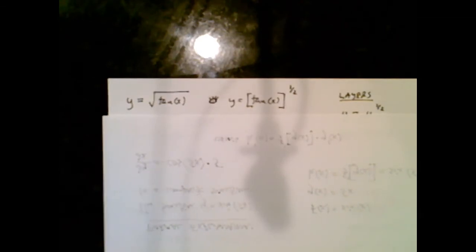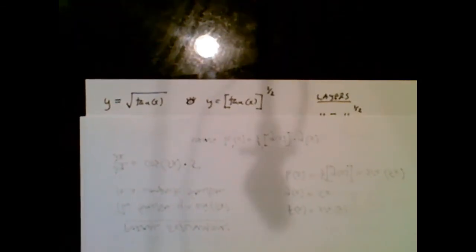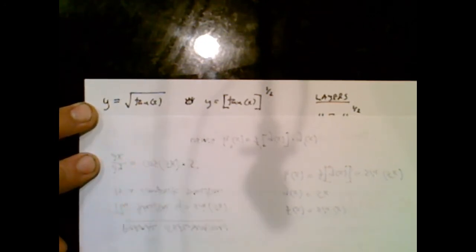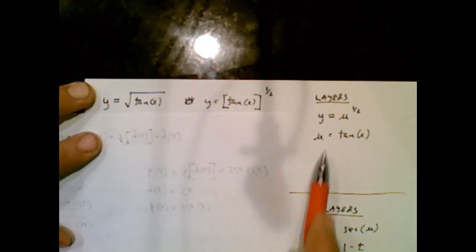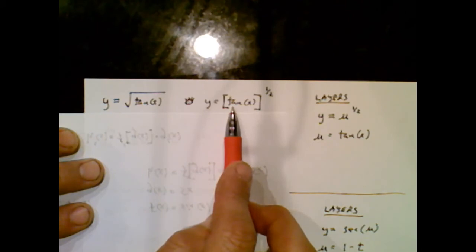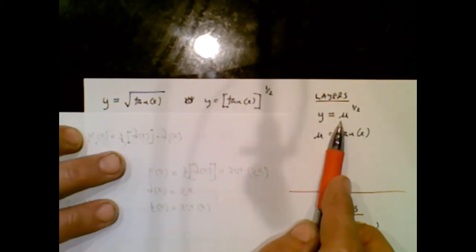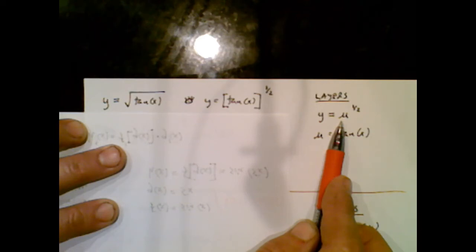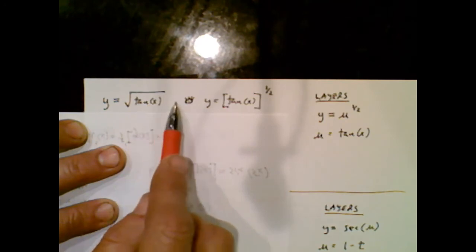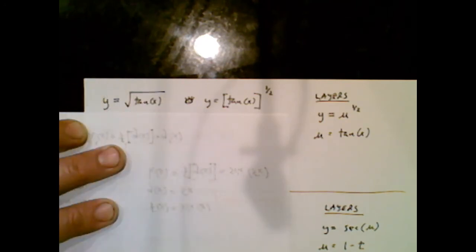Okay, our first example is y equals the square root of the tangent of x. That doesn't necessarily look like you have layers, but you really do. You have the layers. By the way, I did an eyeball adjustment. You have a u to the one half as an outer layer, and inside of that is the tangent function. Or put differently, the tangent function is living inside of the square root function.